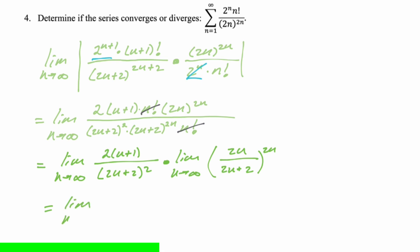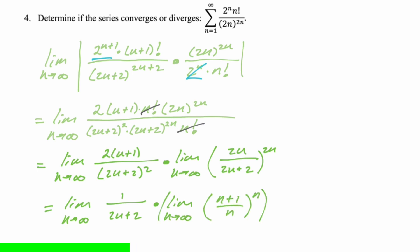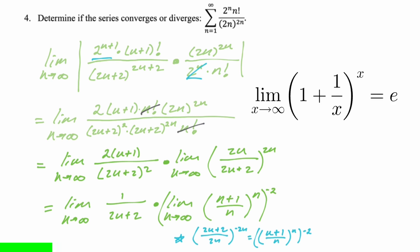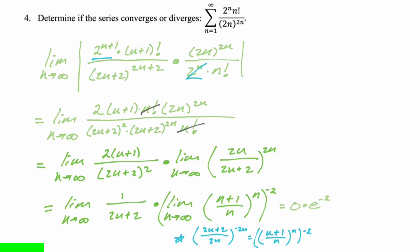The first limit simplifies to 1 over (2n+2), which clearly goes to 0. For the second limit, we rewrite (2n over 2n+2) to the 2n as (n+1 over n) to the n to the negative second power. That limit, famously, is e to the negative second, since the limit of (1 + 1/n) to the n is e. So we have 0 times e to the negative 2, which is 0. Since 0 < 1, this series converges.